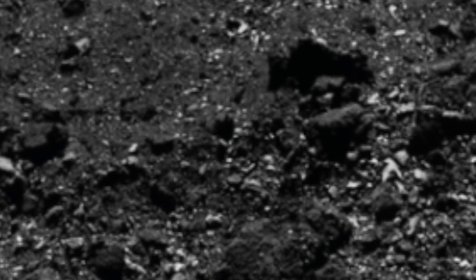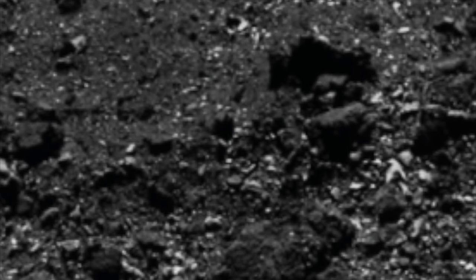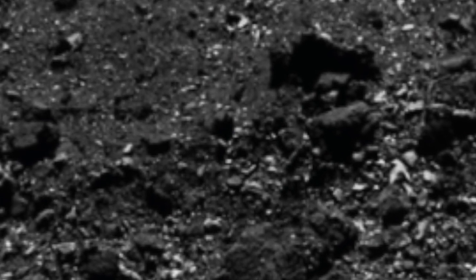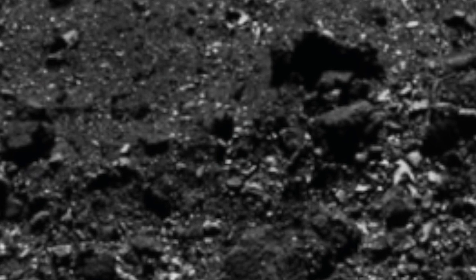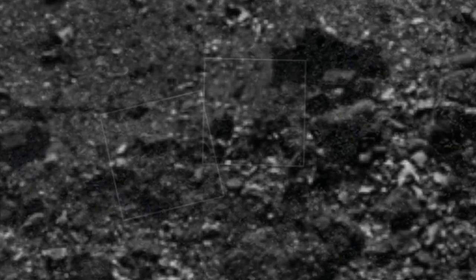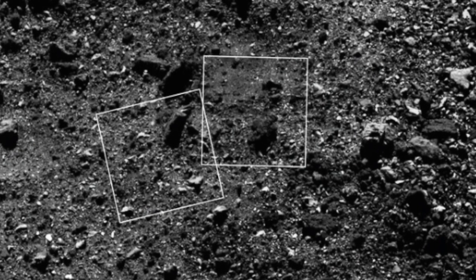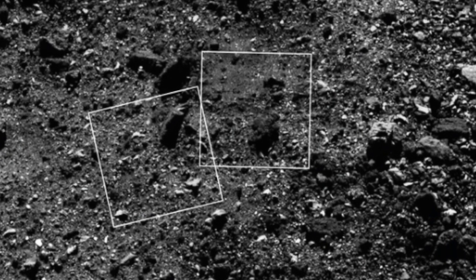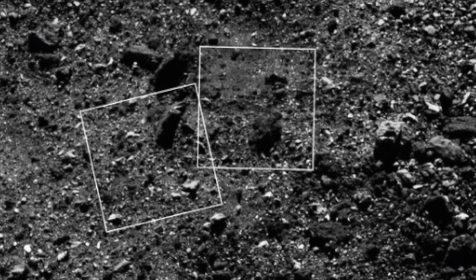NASA researchers have just said they've discovered something they didn't expect. It turns out scientists were expecting Bennu to be made of sand, but instead it's made of rocks. The lander was programmed to pick up this sand-like substance, but it's caused a slight problem to the mission due to the terrain.